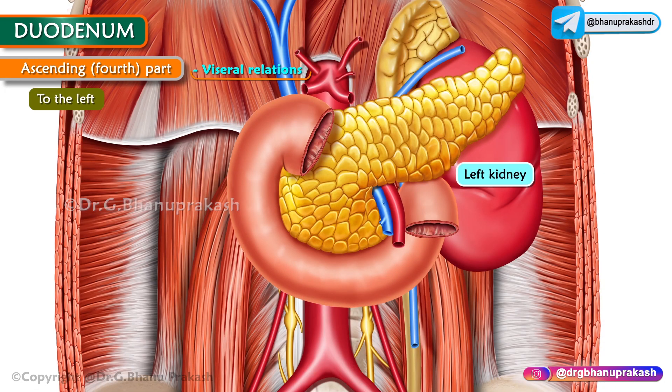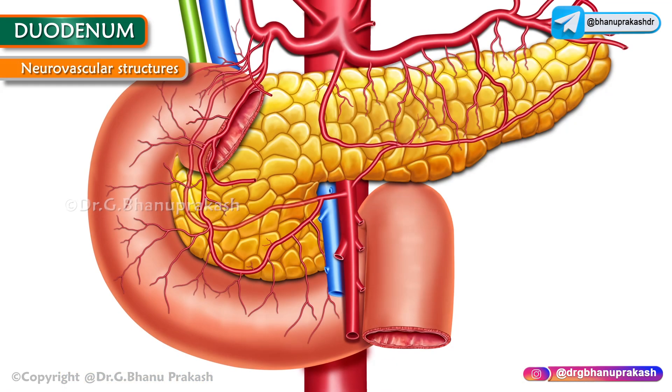To the right of the fourth part is the attachment of the upper part of the root of the mesentery, and to the left is the left kidney.